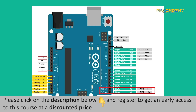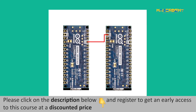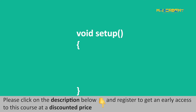All Arduino boards consist of TX and RX pins on digital pins 0 and 1 respectively. If we want to establish a UART communication between two Arduino boards, connect the transmitter pin of one board to the receiver pin of the other board, and connect the receiver pin of the first board with the transmitter pin of the second board. To send and receive data through UART, we first need to set the baud rate inside the void setup function, using the command Serial1.begin(9600).